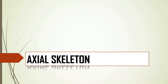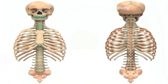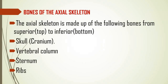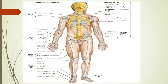Now let's look at the axial skeleton. Bones of the axial skeleton include, from top to bottom: the skull (also called the cranium), the vertebral column, the sternum anteriorly, and the ribs. The skull has 22 bones and is separated into the cranium — also called the calvaria — and the face. The cranium is made up of 8 bones, and the face is made up of 14 bones.